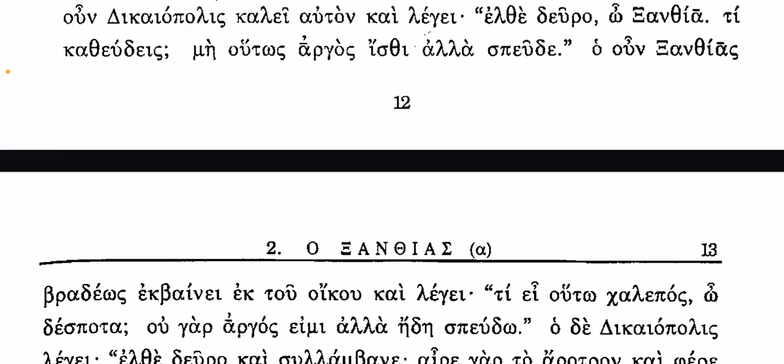He says: 'O un Xanthias bradeos ekbainei ek tou oikou ke legei' — therefore Xanthias slowly comes out of the house and says. 'Vradeos' means slowly, 'ekbainei' means walks out, 'ek tou oikou' means out from the house, and 'ke legei' means and says.